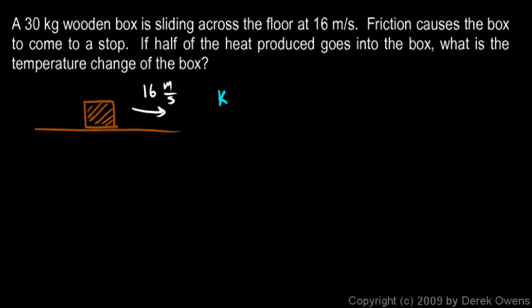Kinetic energy is one-half mv squared and we know all of these numbers. We know the mass is 30 kilograms and we know the velocity is 16 meters per second, and we have to square that. When we work that out, that comes out to 3840 joules. That's the kinetic energy of the box that gets converted into heat.